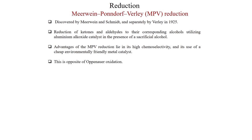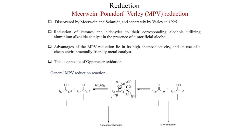This is opposite to Oppenauer oxidation which we have already discussed. In MPV reduction, the alcohol is the hydride source and the ketone is what will be reduced. The aluminum alkoxide catalyst facilitates binding of both the carbonyl compound and the alcohol to the aluminum center. One OAr is replaced by the alcohol, and then hydride delivery takes place, so the ketone is converted to an alcohol. This process is called MPV reduction.